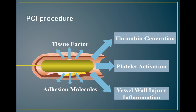Angioplasty involves inflating a balloon to compress the blockage against the vessel wall, while stenting is more permanent — placing a device to keep the blockage pushed aside. Both produce deep vessel wall injury and plaque disruption. Additionally, the catheters and devices entering the arteries are foreign materials, making them inherently thrombogenic and capable of activating the clotting cascade, potentially triggering coagulation, platelet activation, and a systemic inflammatory response.